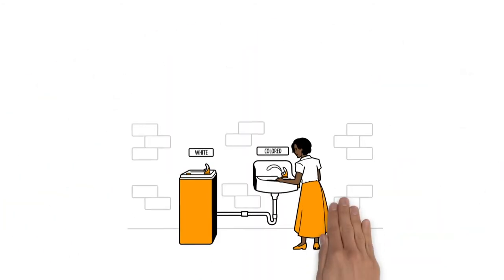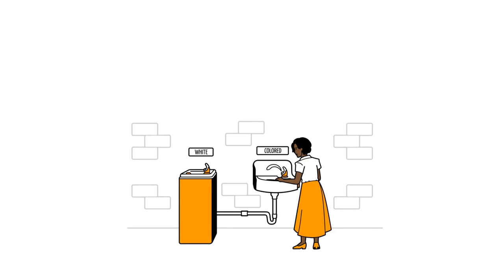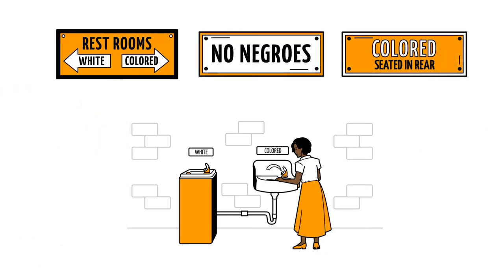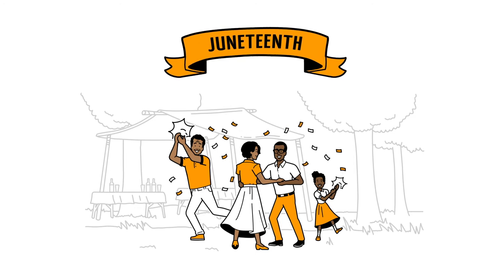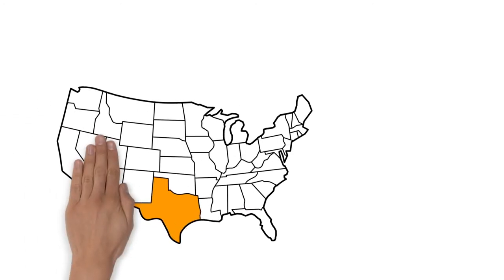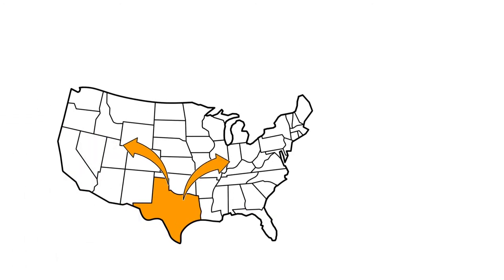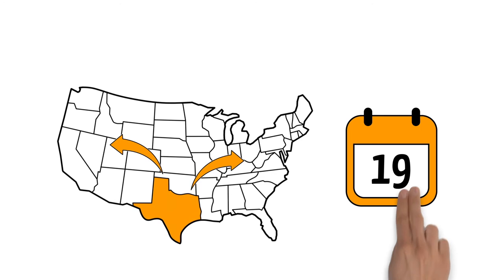Even though African Americans did not receive the same liberties as others, they and their descendants continued the celebration every year. And as they migrated from Texas to other parts of the country, the Juneteenth tradition spread, becoming an annual tradition in many states.